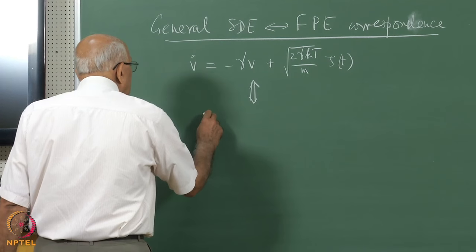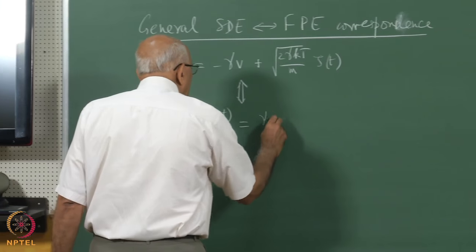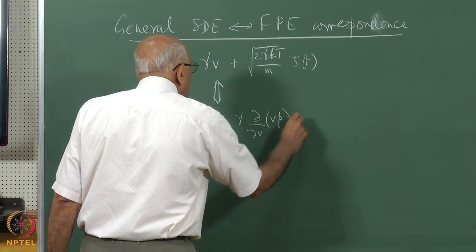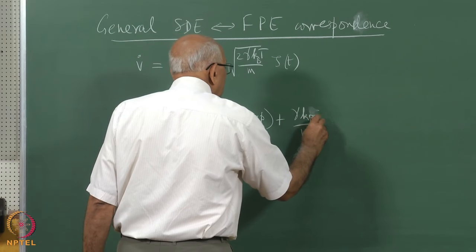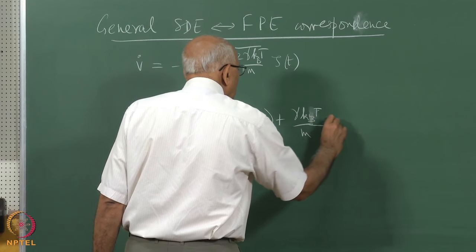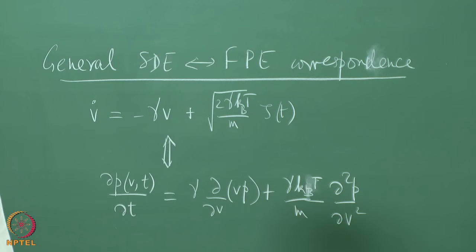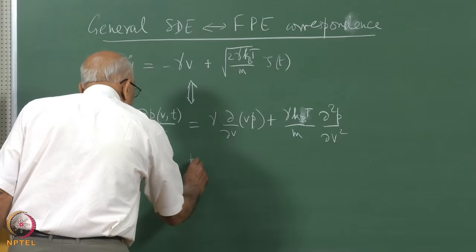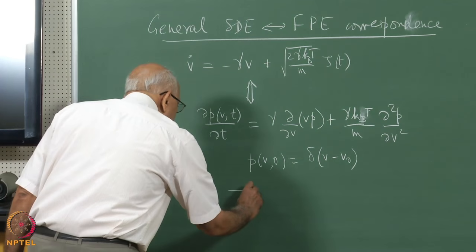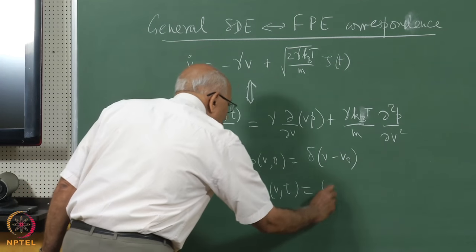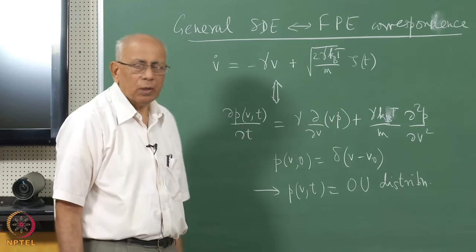This implied that the conditional density of V satisfied the equation: delta P over delta T equal to gamma times delta over delta V of V times P, plus gamma K_Boltzmann T over M times d²P over dV². We solve this with the initial condition P(V, 0) equal to a delta function at V naught, which leads to the Ornstein-Uhlenbeck distribution. That was the first Fokker-Planck equation we derived.